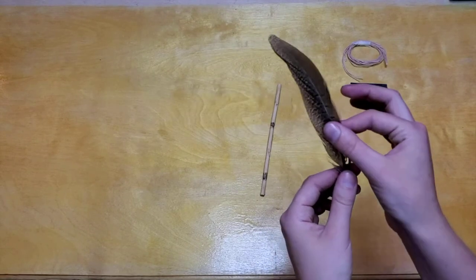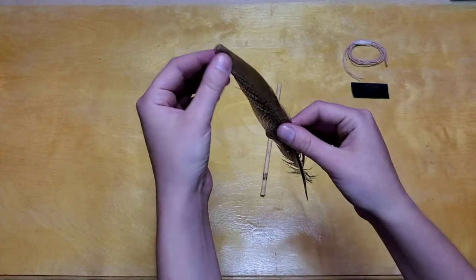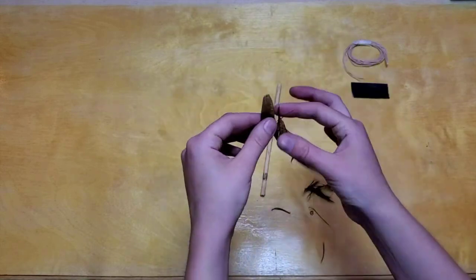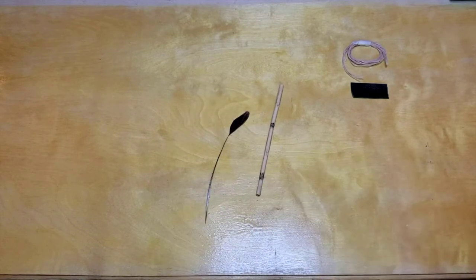All right so what you're going to do with that pheasant feather is the same process you did for the duck feather. So you're going to select what you want for your bristles and then you're going to take off the rest of the barbs. Just like so.